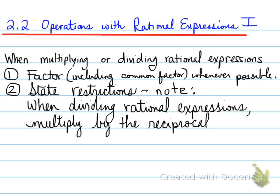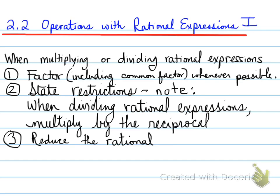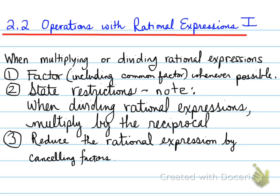That means you flip and multiply the second rational expression. That also goes back to Part 2 at the beginning where it says state restrictions. Anytime there is a denominator, you must state that restriction. Part 3: you need to reduce the rational expression by canceling factors. We're going to look at examples of where you can and cannot cancel.